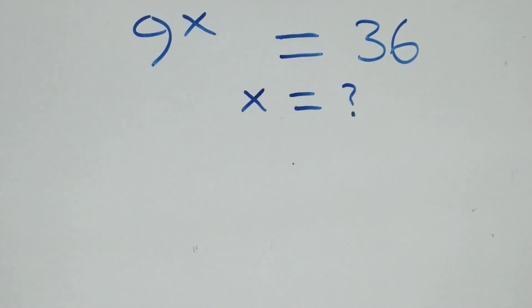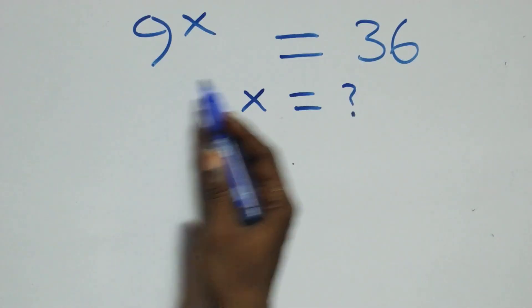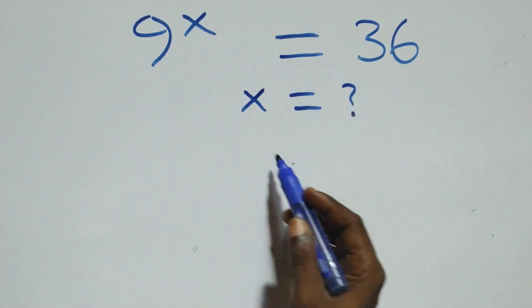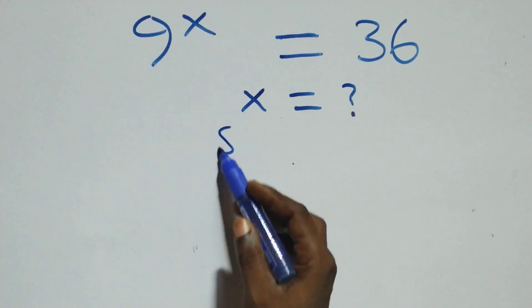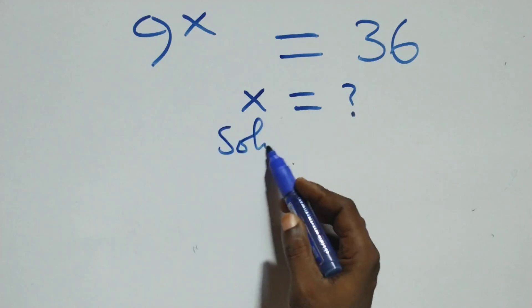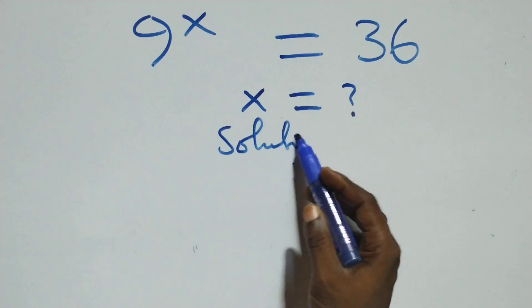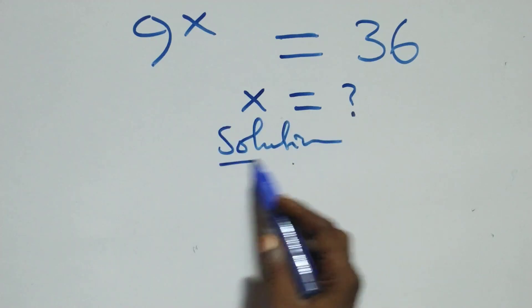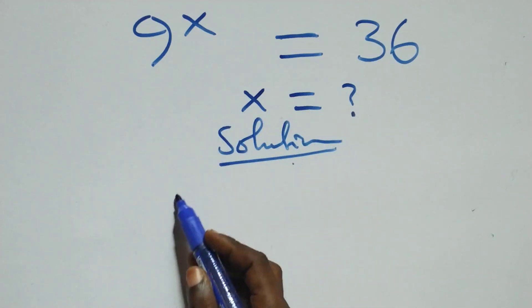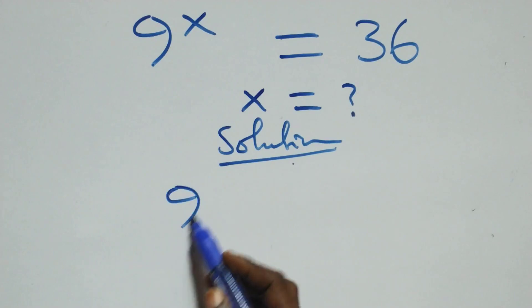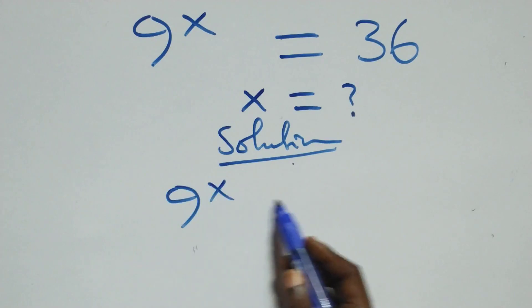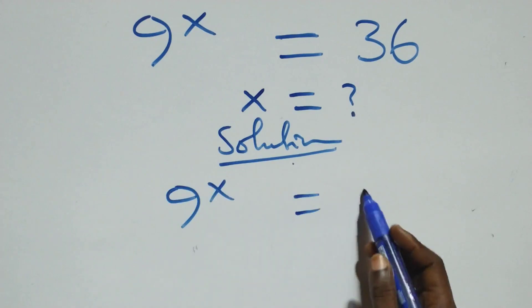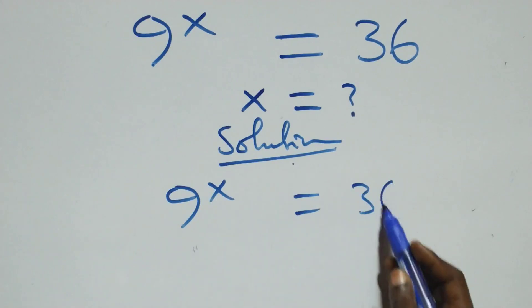Hello, you're welcome. How to solve this nice exponential equation. The problem we have here is: 9 raised to power x equals 36.